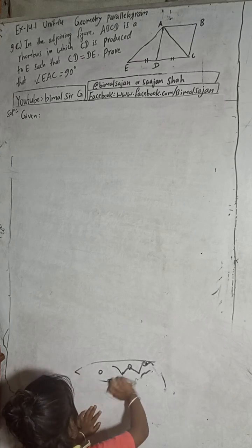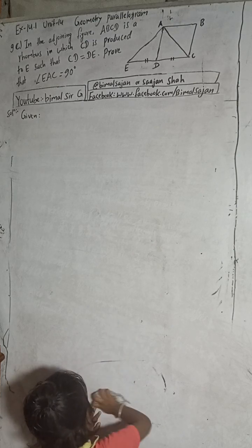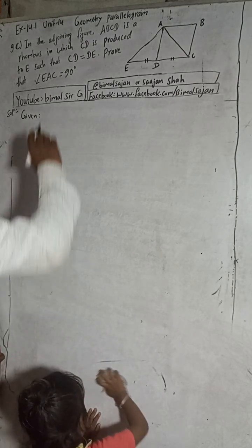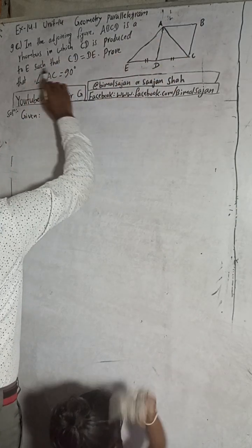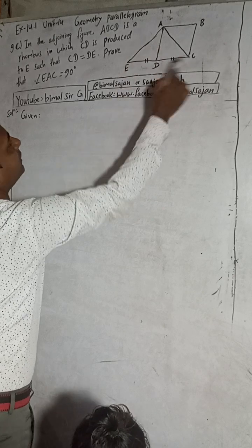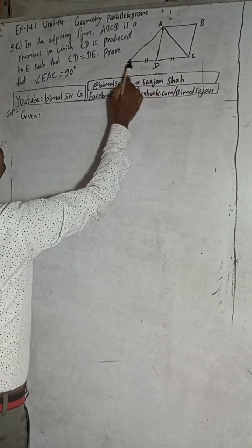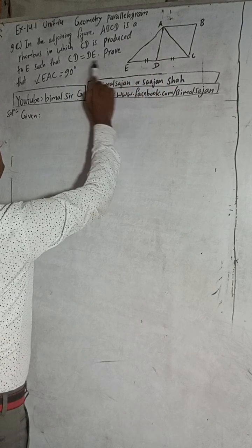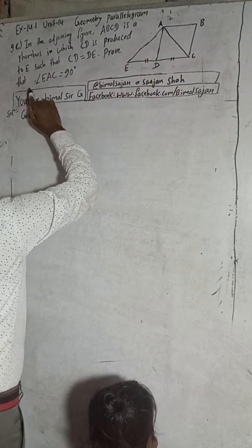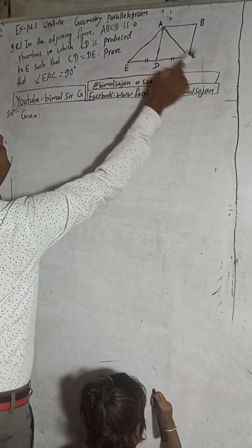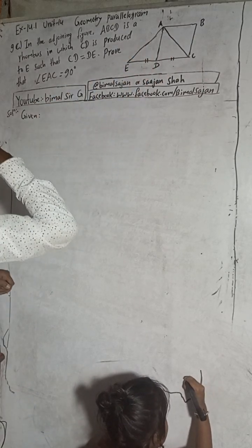Now let's begin the solution. Question 9c: in the adjoining figure, ABCD is a rhombus in which CD is produced to E such that CD is equal to DE. We have to prove that angle EAC is equal to 90 degrees.